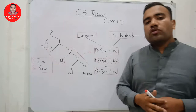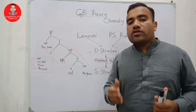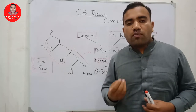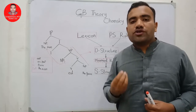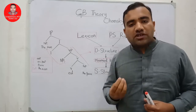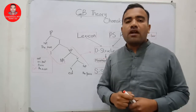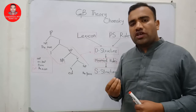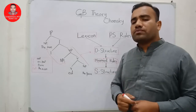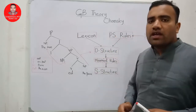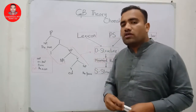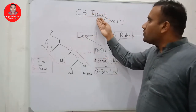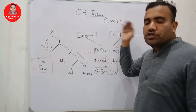In this video I am going to tell you what is the initial, what is the primitive, what is the first model of language that Chomsky has presented to us. In the previous videos we have already discussed all these things in detail. This model is called the Government and Binding Theory by Noam Chomsky.